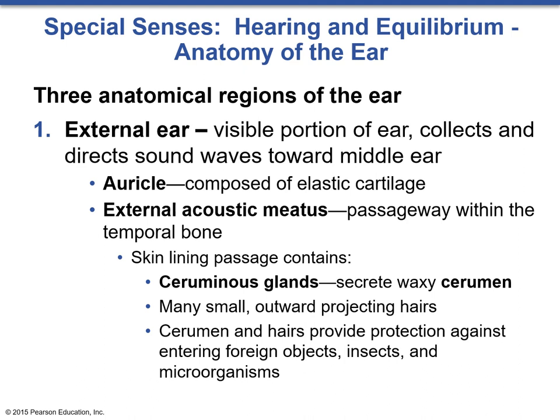We'll start by looking at the ear and some of its major gross anatomical structures. The ear itself is divided into the external, middle, and inner ear. The external ear is the visible portion and it collects and directs sound waves towards the middle ear. We have the auricle — that's your outer ear that you can grab. It is composed of elastic cartilage, meaning you can bend and distort it and it bounces back to its original shape. The ear is one of the few places in the body with extensive amounts of elastic cartilage.